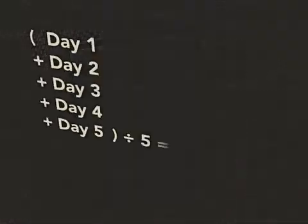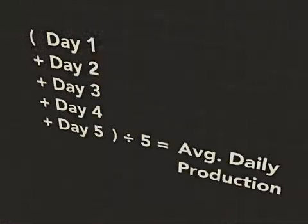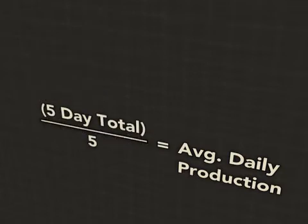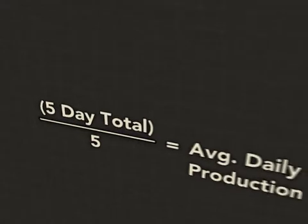This equation can then become a general formula to determine the average production for any five days. In some cases, formulas may often be displayed as a fraction. This equation would be handled in the same way. The top would be calculated first, and then the result would be divided by 5.